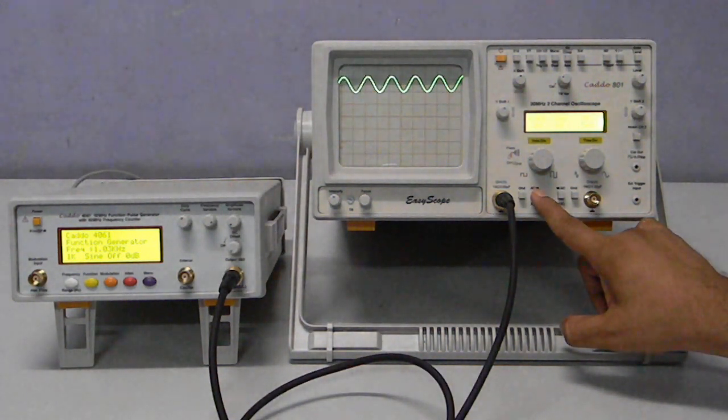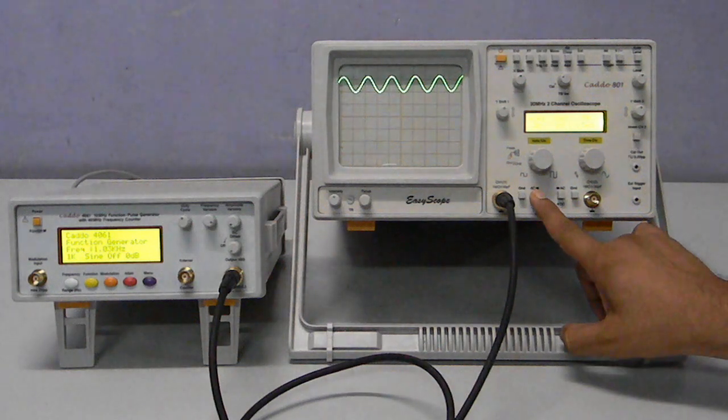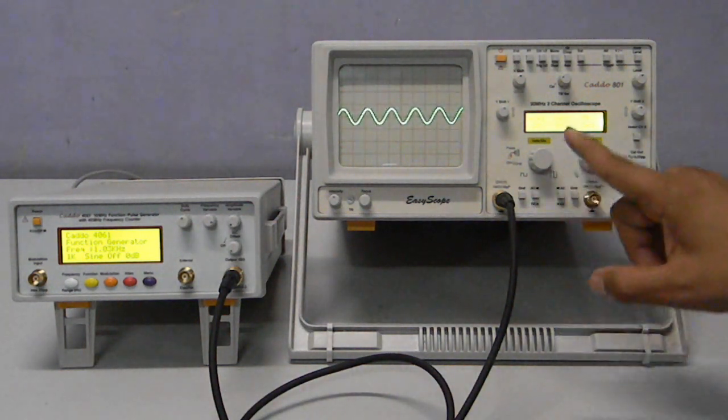If the same signal is observed in AC coupled mode, we cannot see that there is any DC offset.